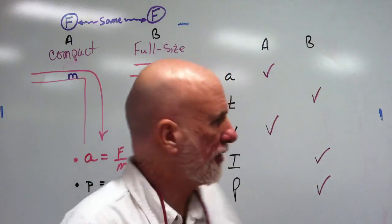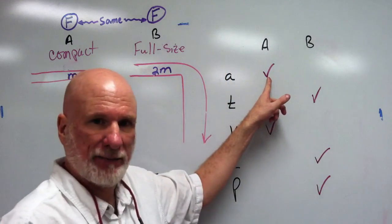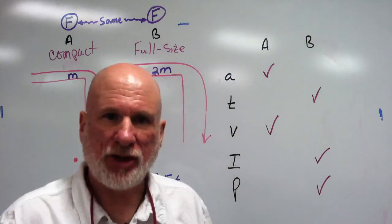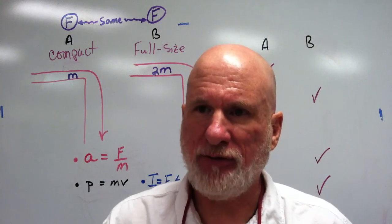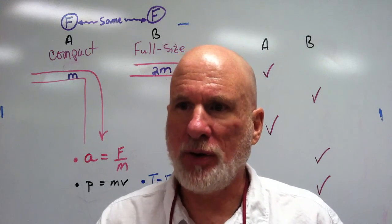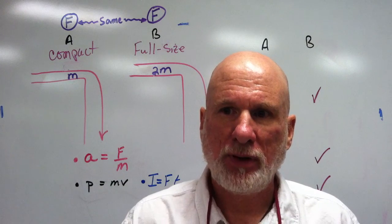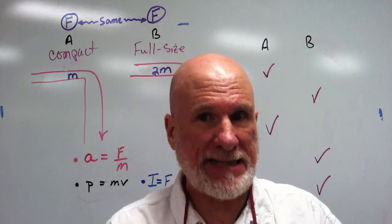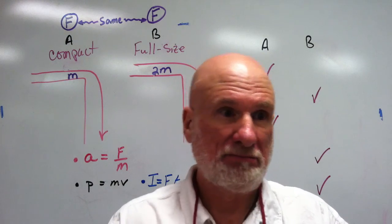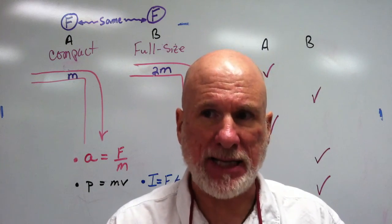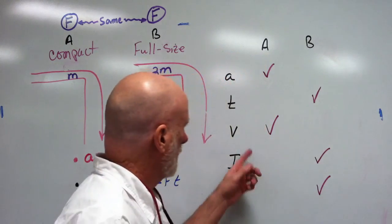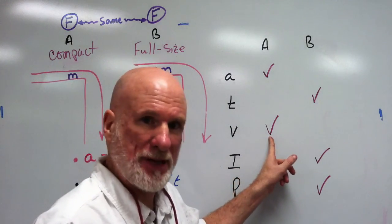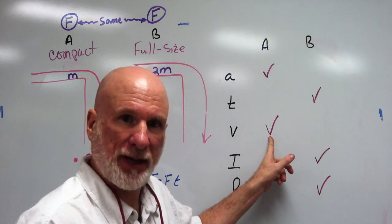Now it's a greater acceleration, therefore it's going to achieve a greater velocity when it hits that cliff. The velocity will be greater for the compact car.